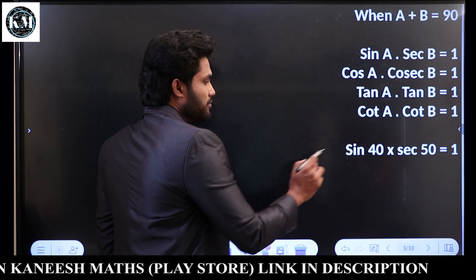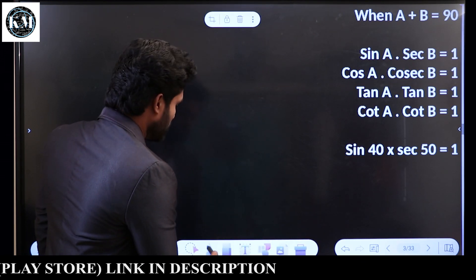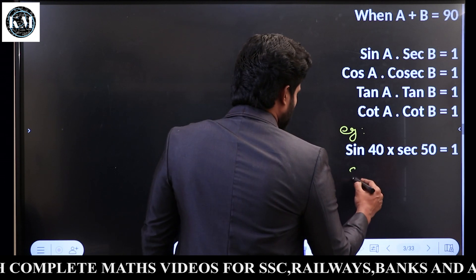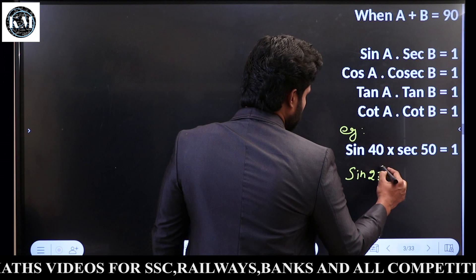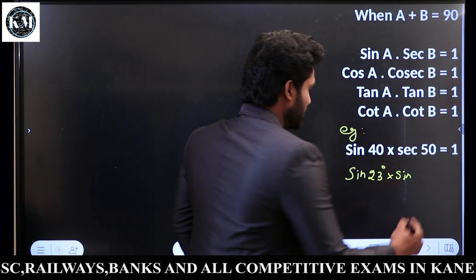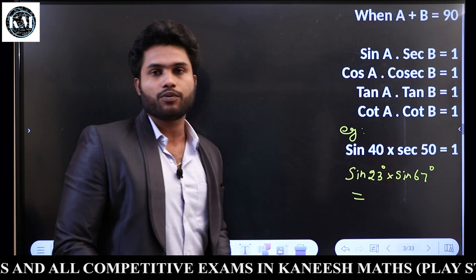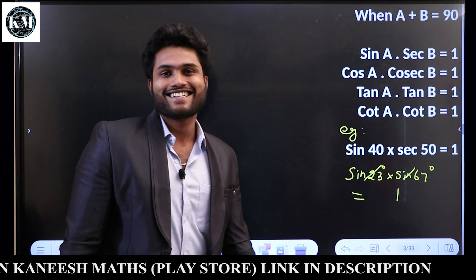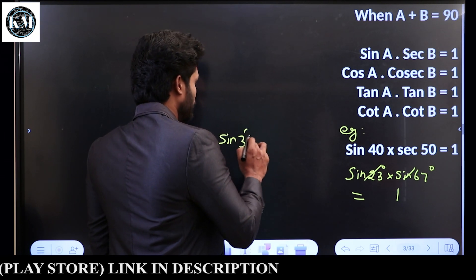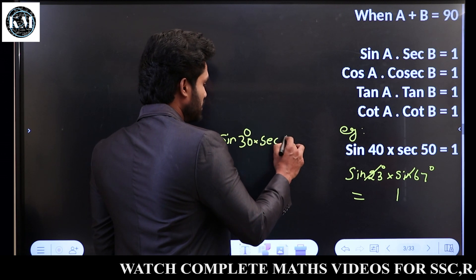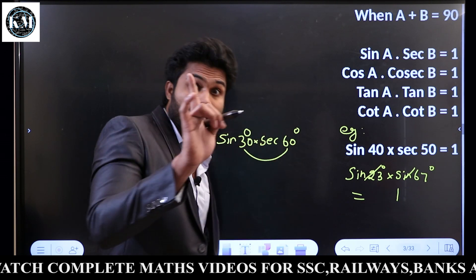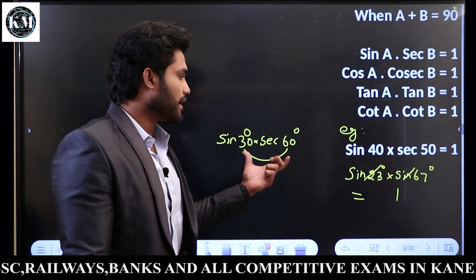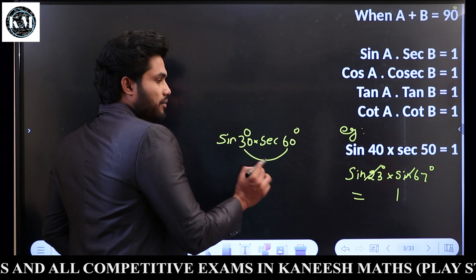Sin A × Sec B. For example, Sin 40 × Sec 50. One more: Sin 23 × Sin 67. You can see the value is 1. Here, Sin 30 into Sec 60 — 30 and 60 add up to 90. This rule: A plus B equals 90 degrees. Correct.